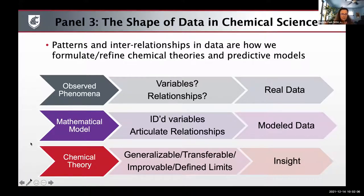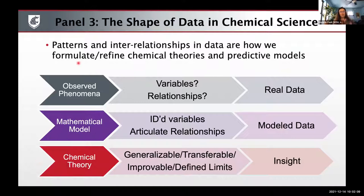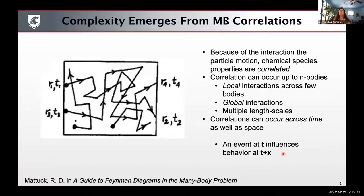The question really is how can we go from observed phenomena and real data to mathematical models that yield model data to chemical theories which provide insight? The complexity and challenges associated with that whole process really derive in a lot of chemical systems from many-body correlations.